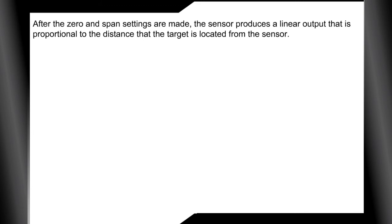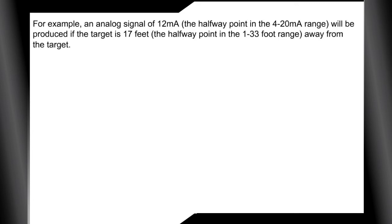After the zero and span settings are made, the sensor produces a linear output that is proportional to the distance that the target is located from the sensor. For example, an analog signal of 12 milliamps will be produced if the target is 17 feet away from the sensor.